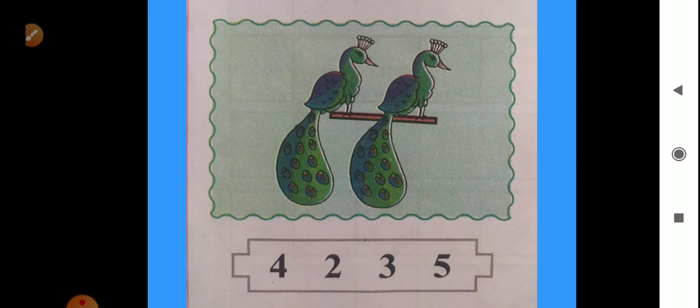Here are peacocks. What is here? Peacocks. And in the below box we can see the numbers. 4, 2, 3, 5. Out of this number we will circle the correct number. Okay. First we count the peacocks. How many peacocks are here?